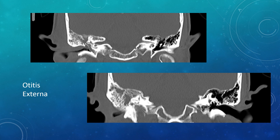Starting with the external auditory canal, the most common pathology that you'll see is otitis externa. You see thickening of the mucosal surface of the external auditory canal, and you can see that air-filled external auditory canal is narrowed. It's all very smooth mucosal thickening along the bony surface. This person also has fluid in the mastoid air cells and middle ear cavity, giving an otitis externa with otomastoiditis.